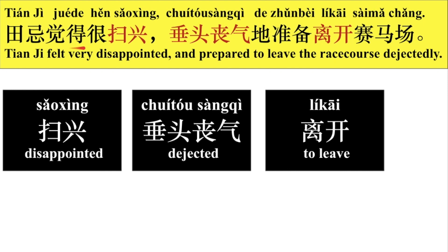那他垂头丧气的准备离开赛马场，赛马场就是赛马的地方，我们就可以叫赛马场。田纪觉得很扫兴，垂头丧气的准备离开赛马场。好，那今天我们这个故事先讲到这里，以后我们再讲后面的故事。